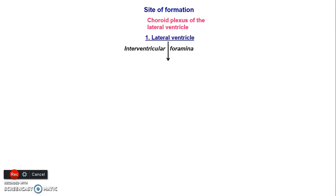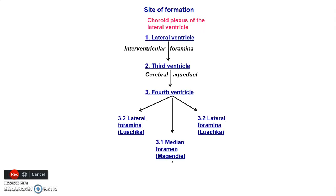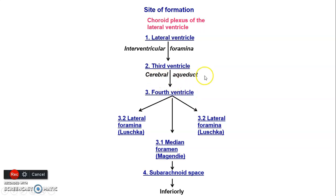Regarding formation and flow of CSF: CSF is formed mainly by the choroid plexus of the lateral ventricle. From the lateral ventricle, CSF gets to the third ventricle through the interventricular foramen of Monro. From the third to the fourth ventricle through the cerebral aqueduct of Sylvius, which is at the midbrain. From the fourth ventricle, CSF can leave through three ways: two lateral foramina of Luschka, or one median foramen of Magendie, and CSF then goes into the subarachnoid space.